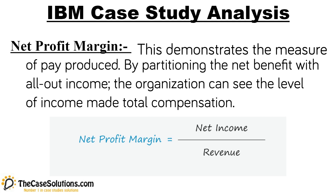Net profit margin demonstrates the measure of pay produced by dividing the net benefit with total revenue. The organization can see the level of income made. Net profit margin enables financial specialists to assess if the organization's administration is creating sufficient benefits from its revenues and whether operating costs and overhead expenses are being controlled.